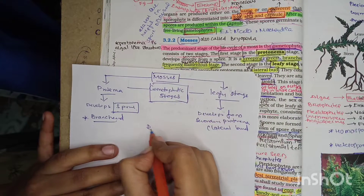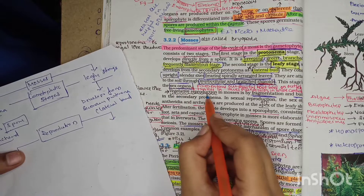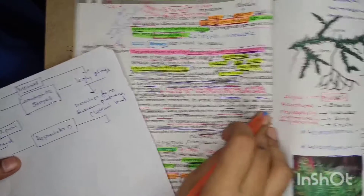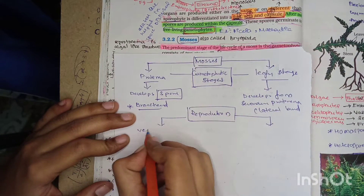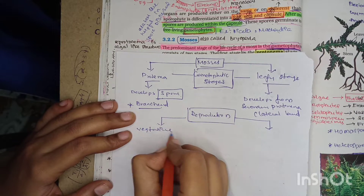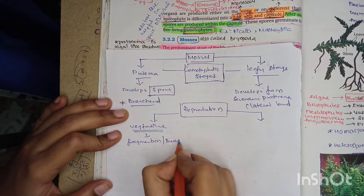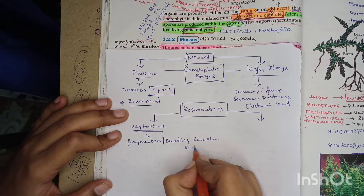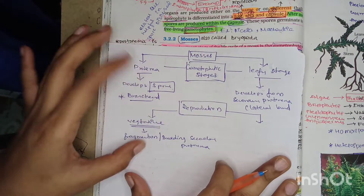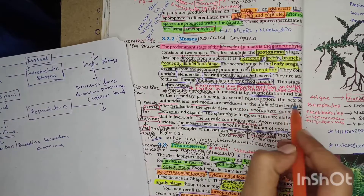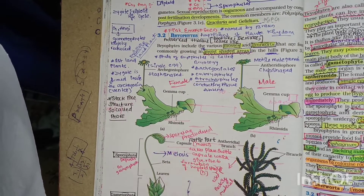Reproduction in mosses is of two types. Vegetative reproduction is by fragmentation and budding in the secondary protonema. In sexual reproduction, the sex organs - antheridium and archegonia - are produced at the apex (tip) of the leafy shoot.